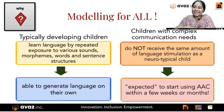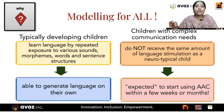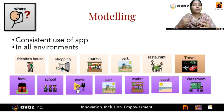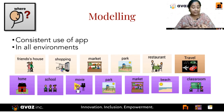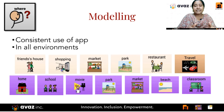Children with complex communication needs are expected to start using AAC within a few weeks or months. Modeling should happen in all environments and in all situations possible — at home, at school, while going out, while traveling, and at outside places like shopping malls, markets, parks, beaches, and restaurants.